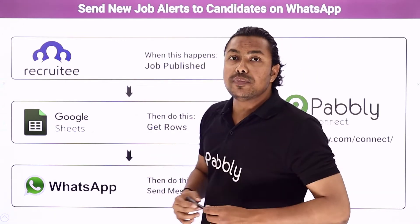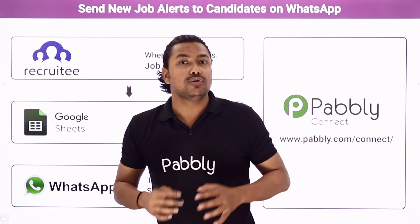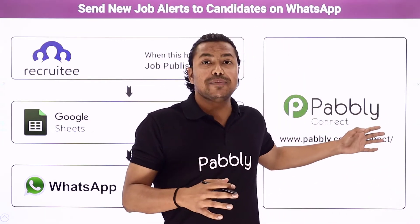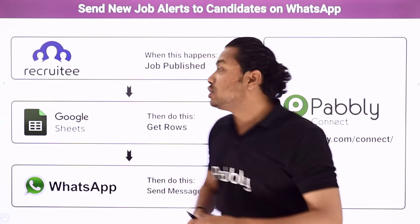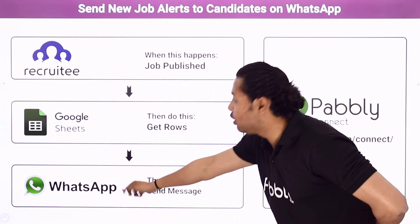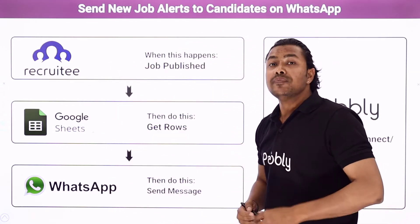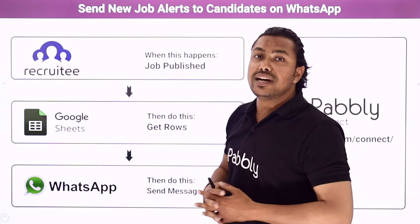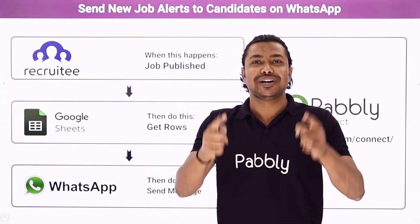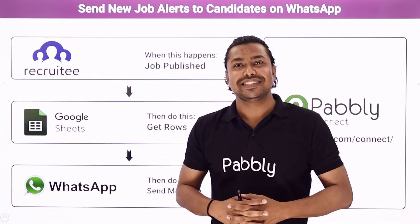Now to do this automation, we are going to use an integration and automation service, Pabbly Connect, which will help us connect Recruitee, Google Sheets and WhatsApp together. Now if you want to learn this amazing automation, you have to come with me to the screen.